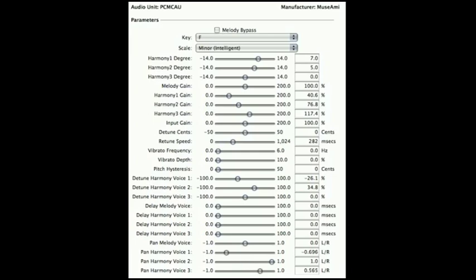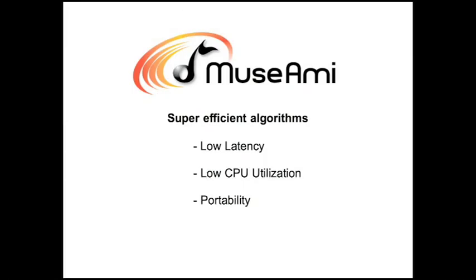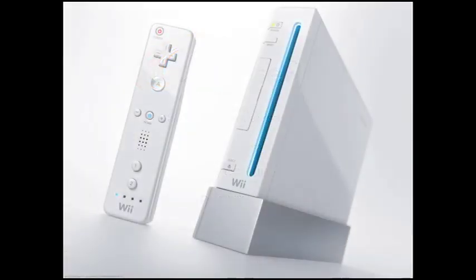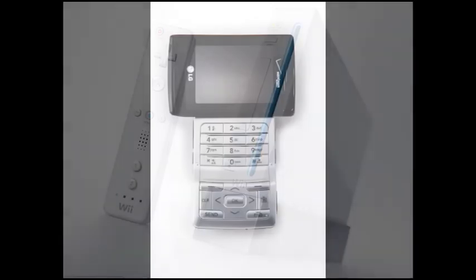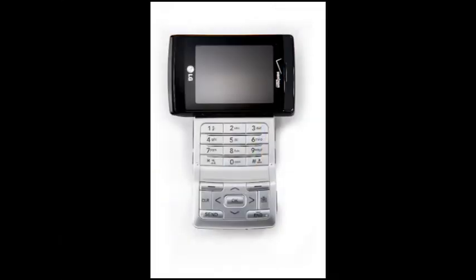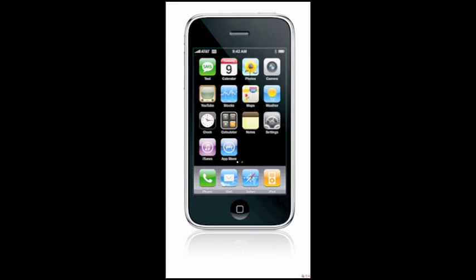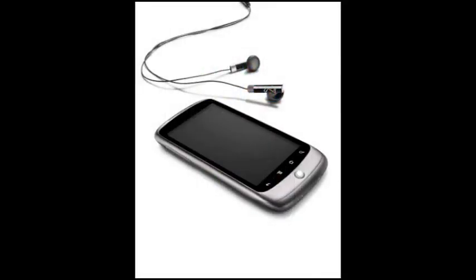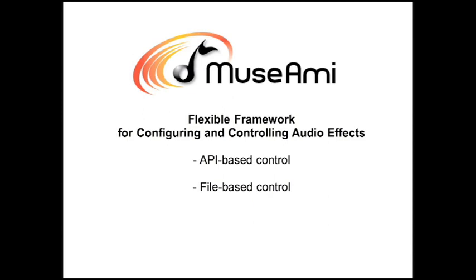One of the things that makes Muzumi technology so appealing to developers is its super-efficient algorithms. We've been successful in porting to a number of computationally limited platforms, including the Wii gaming console, and handheld devices such as ARM9 fixed-point cell phones, the iPhone, and Android phones. Developing games and music apps is facilitated by our Flexible Audio Effects Framework, which allows developers to specify custom effects chains and to access and control all effect parameters and analysis values. The effect chain configuration and parameter controls can occur either in real-time via a software interface or be specified in advance via files.